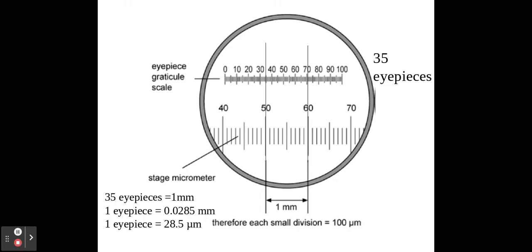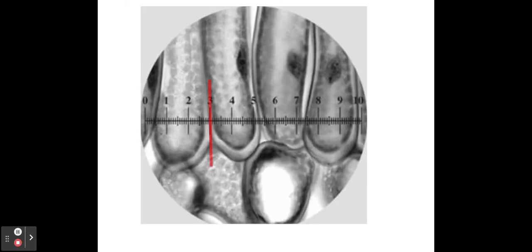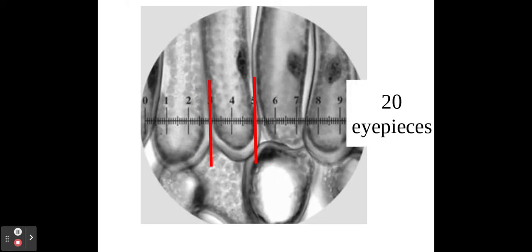As I mentioned before, we rarely work with millimeters when we're talking about microscopes, so when we convert this into micrometers by timesing by a thousand, that gives me 28.5 micrometers per eyepiece. Now, as I measured before, my measurement for my width of that cell was 20 eyepieces, and if I know that each of those little eyepieces is worth 28.5 micrometers, I can times that by 20 to get the total width of that particular cell.